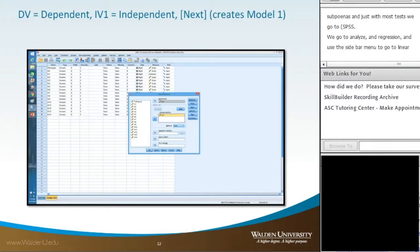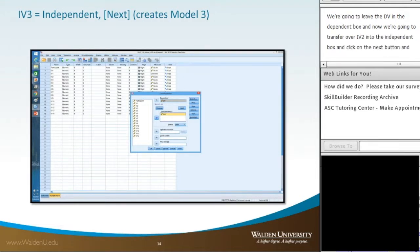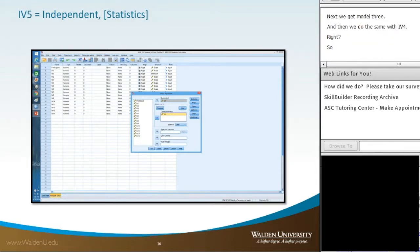Into the dependent box at the top, we'll transfer over DV, and into the independence box we'll transfer over IV1. Then we press that little radio button, Next, and that creates Model 1. We're going to leave the DV in the dependent box and now transfer over IV2 into the independence box and click Next. That creates Model 2. We'll repeat that same process with IV3, click Next to get Model 3, then the same with IV4, so now we have four models. Then our last independent variable is IV5. We move that into the independence box.